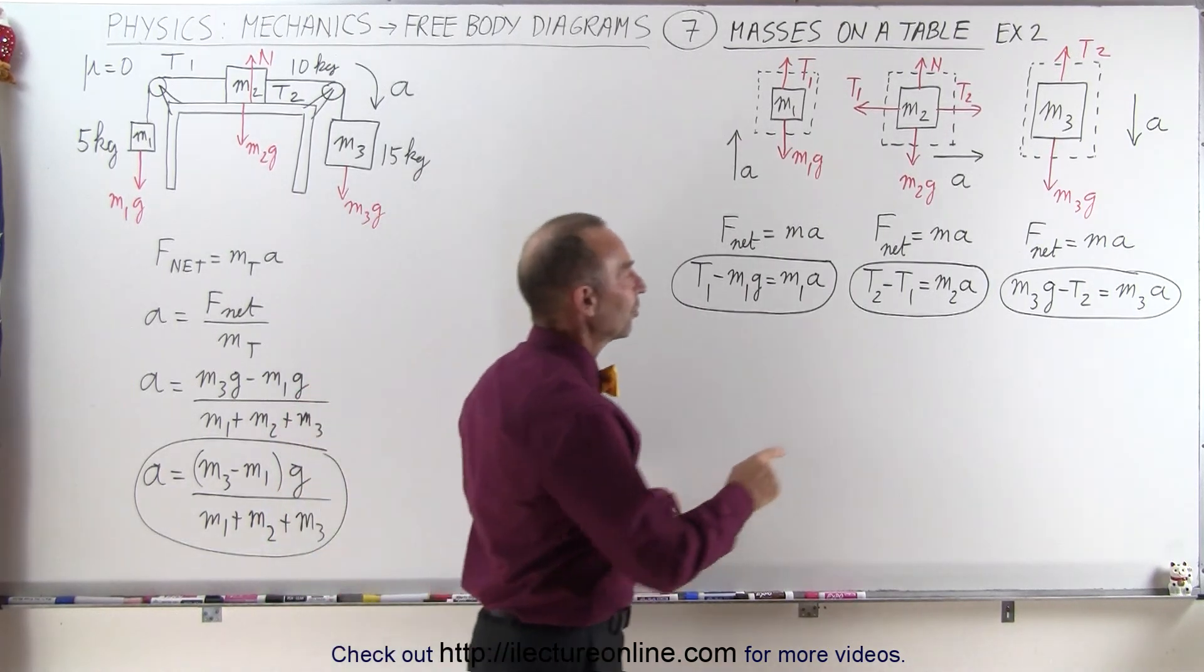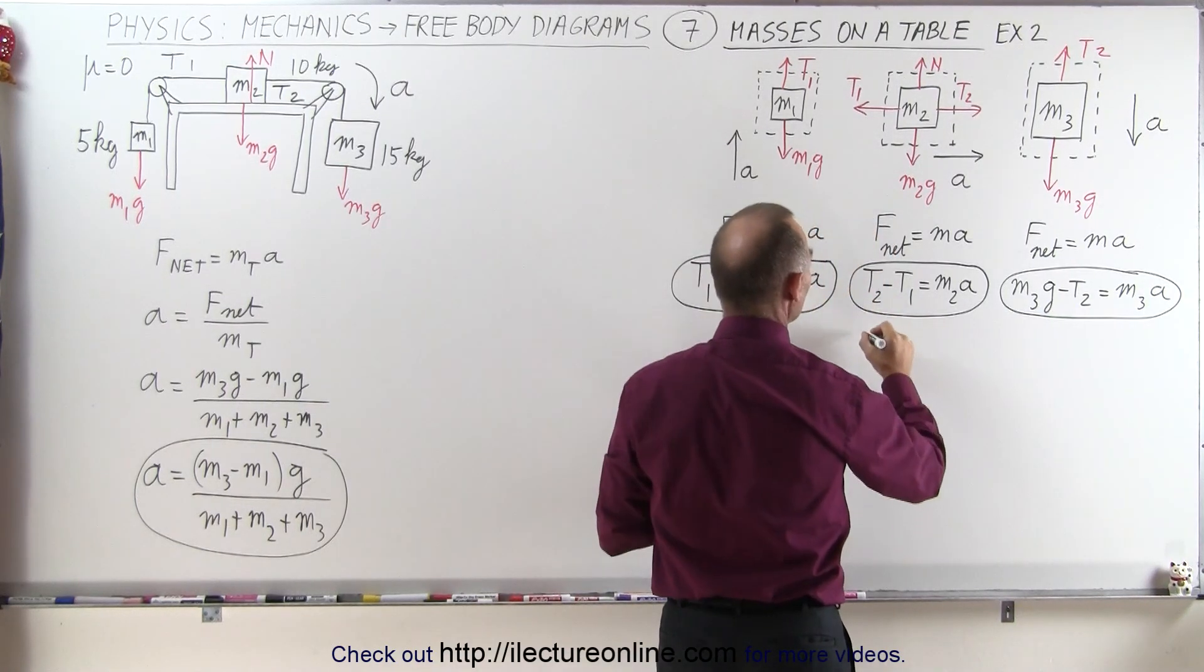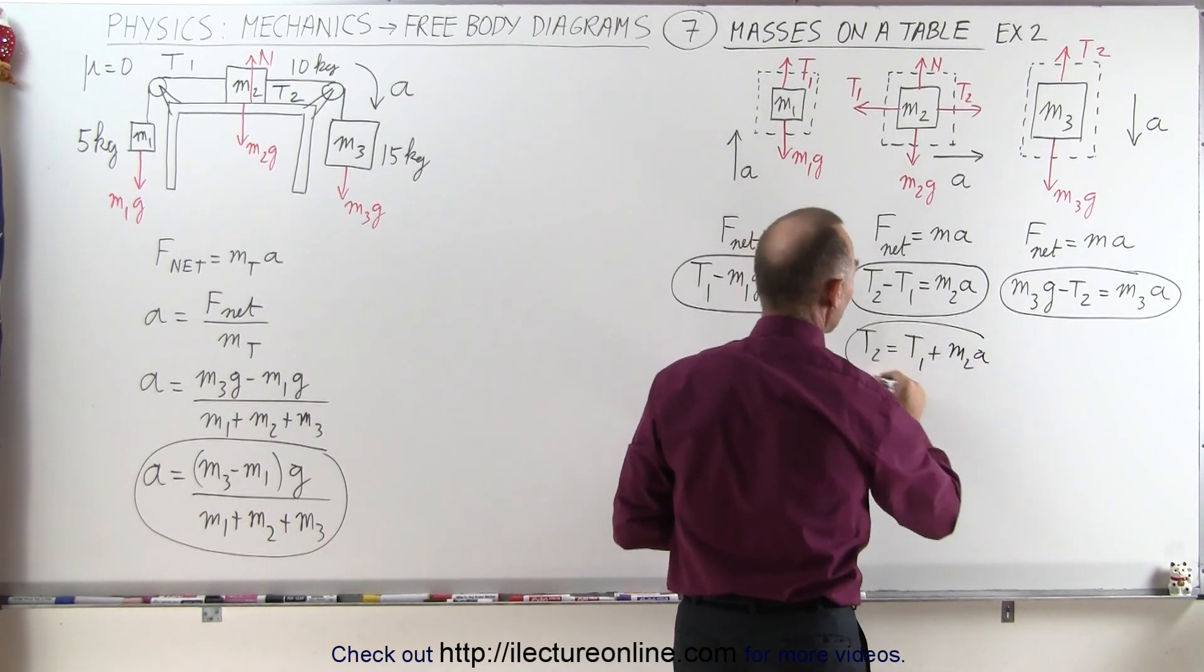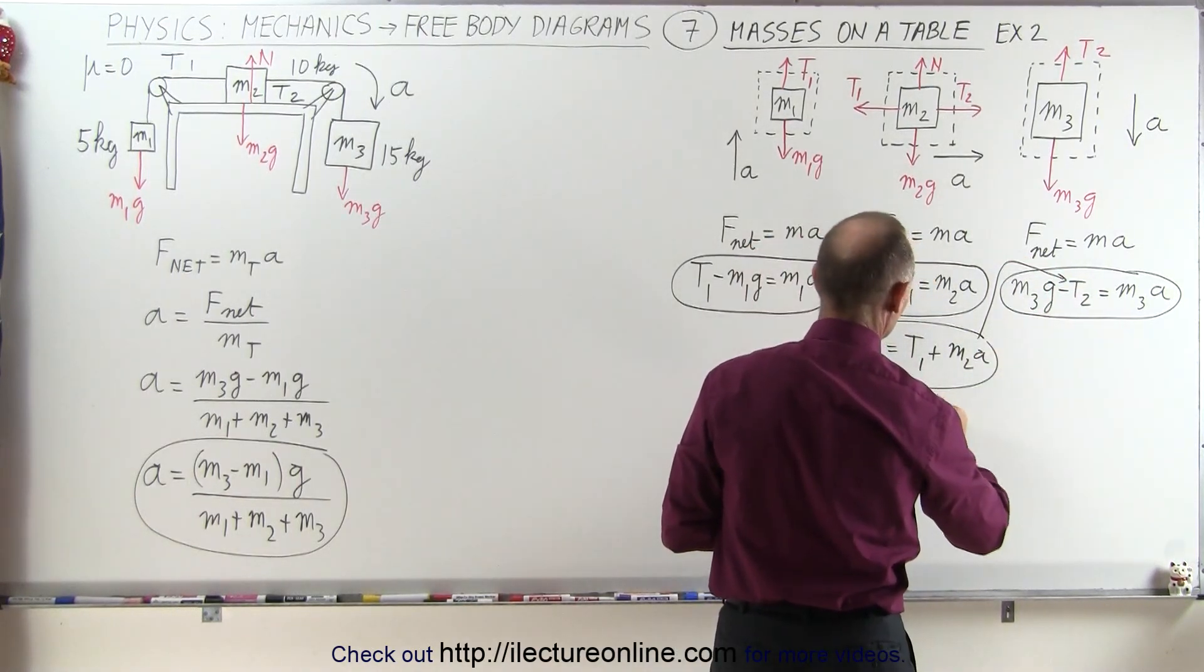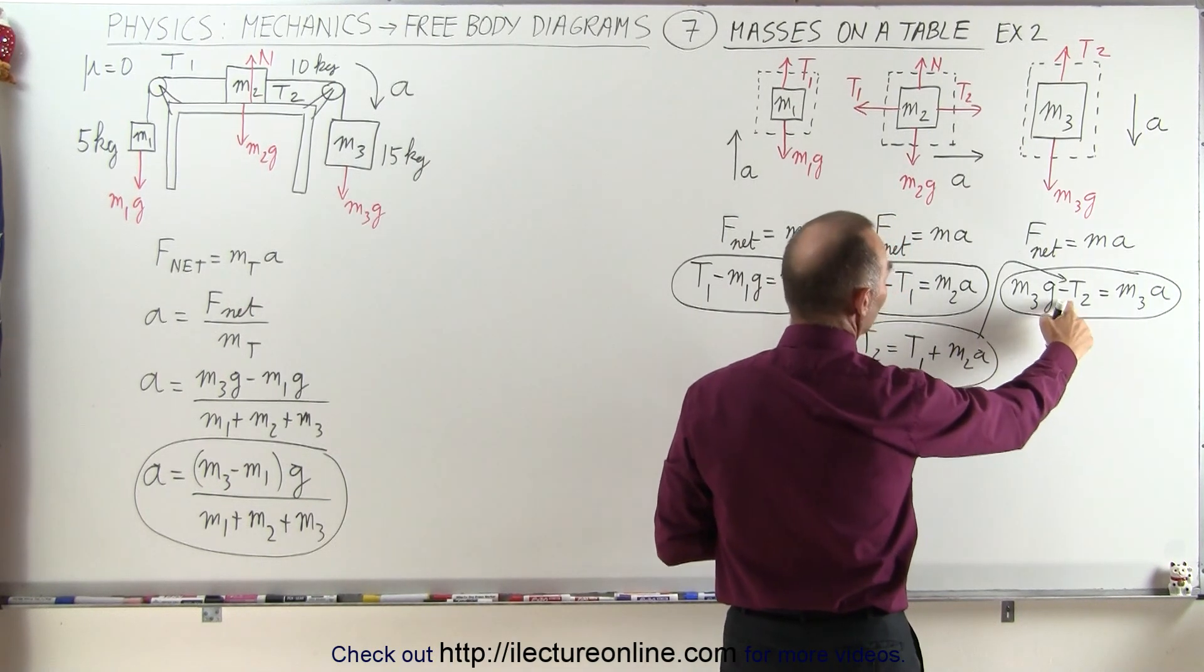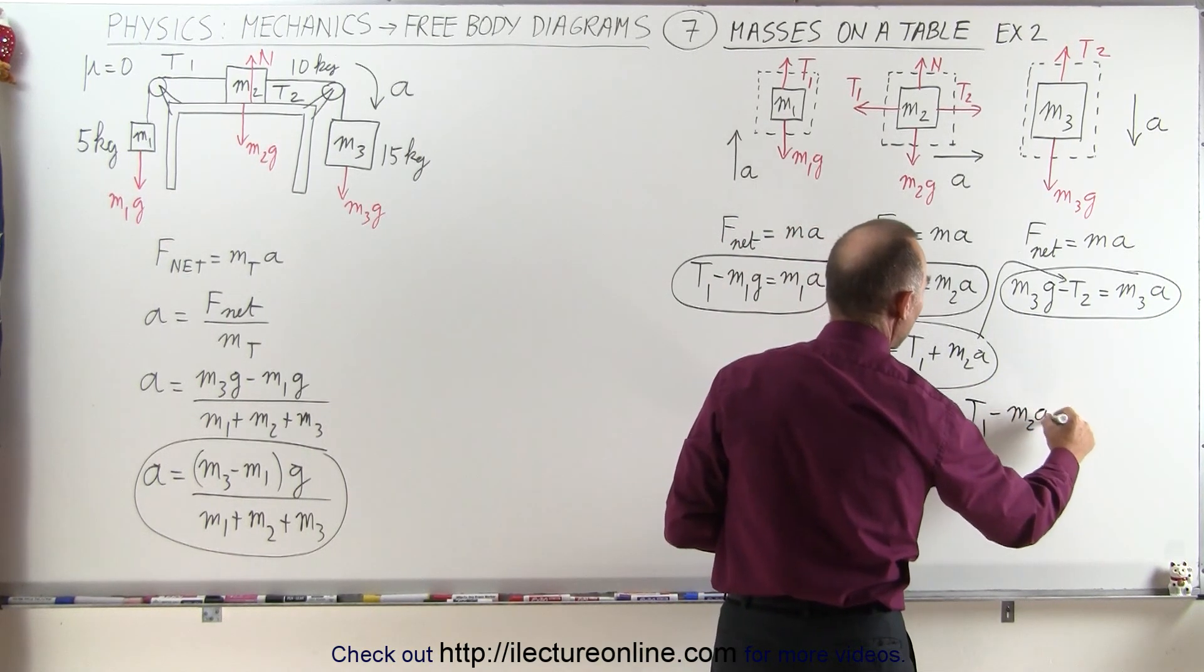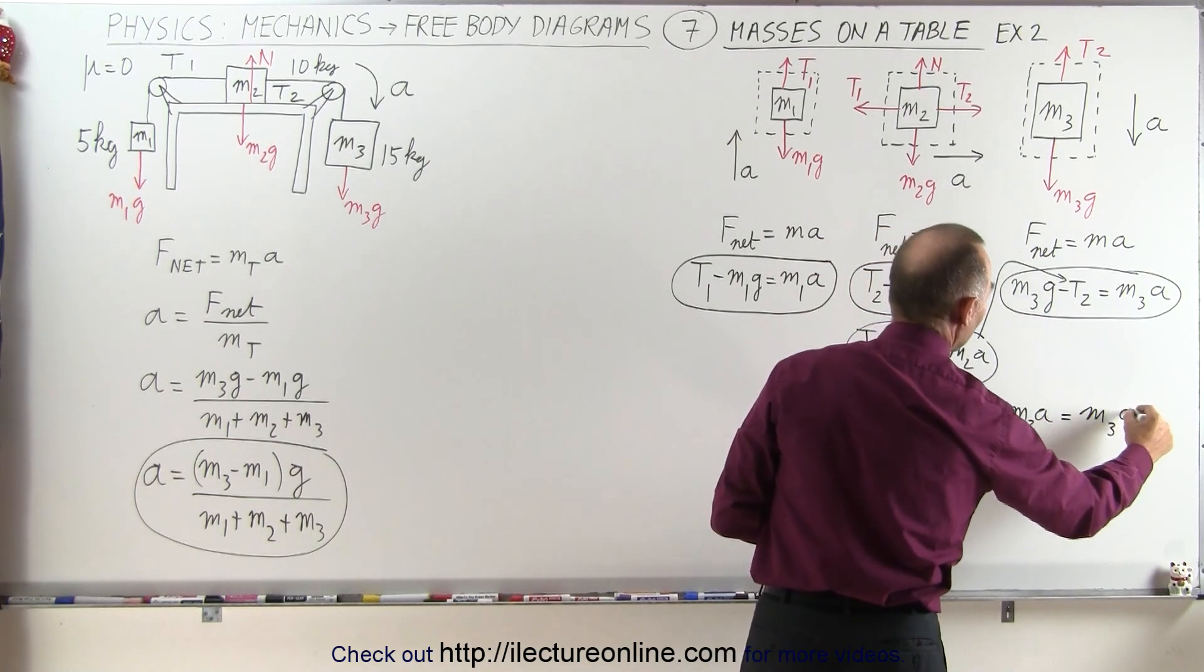So what we're going to do first is solve this equation for t2 and plug it into this equation right here. Which means that t2 is equal to t1 plus m2a, and that is now going to be substituted into the equation over here. So that equation becomes m3g minus, so since it's minus t2 it'll be minus these two quantities right here, so minus t1 minus m2a, so this is replacing t2, and that will now be equal to m3 times a.